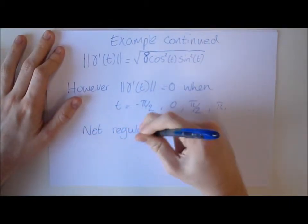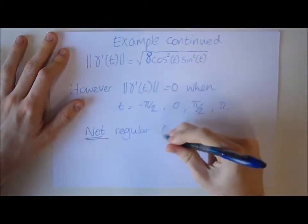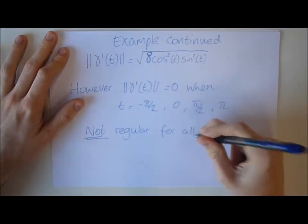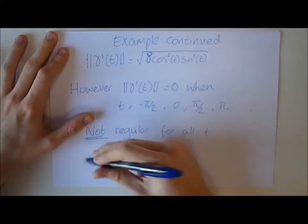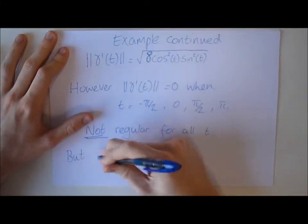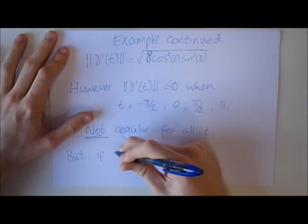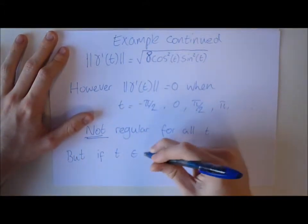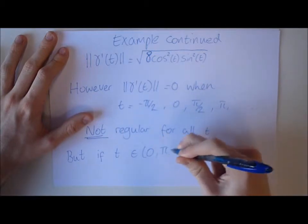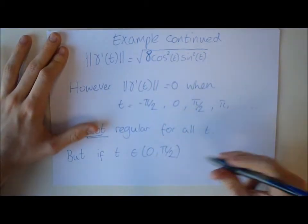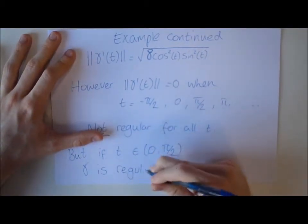But if we define t as t within the interval (0, π/2), this means that gamma is regular.